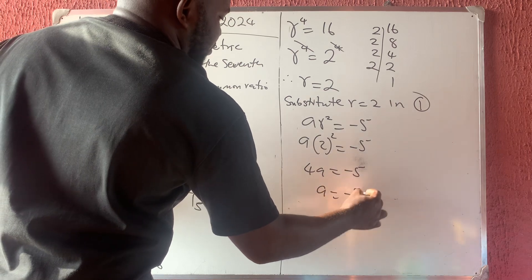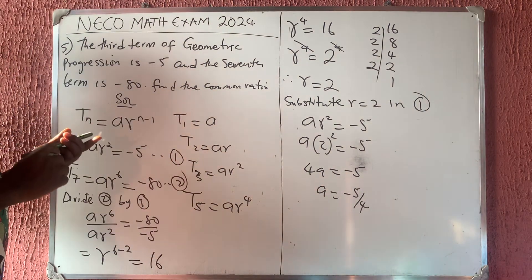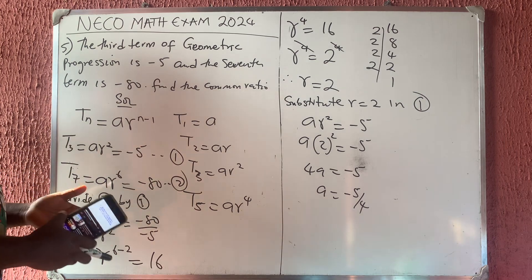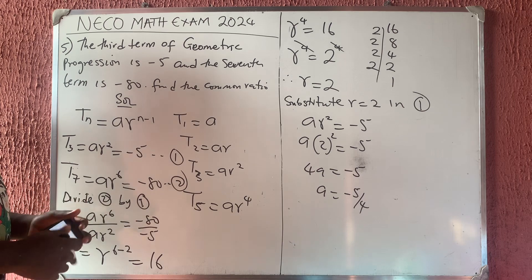Therefore, my A is now minus 5 over 4. So that is the first term of the geometric sequence. So that is that.